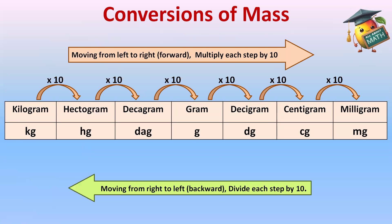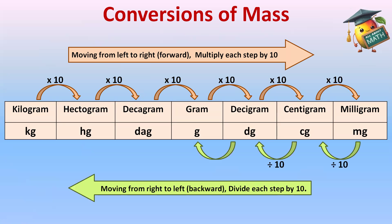Moving from right to left side, that is backward, divide each step by 10. So when we are moving backwards — right to left — we will divide by 10 each step. Let's understand this with the help of examples and see how this table will be helpful in the questions.